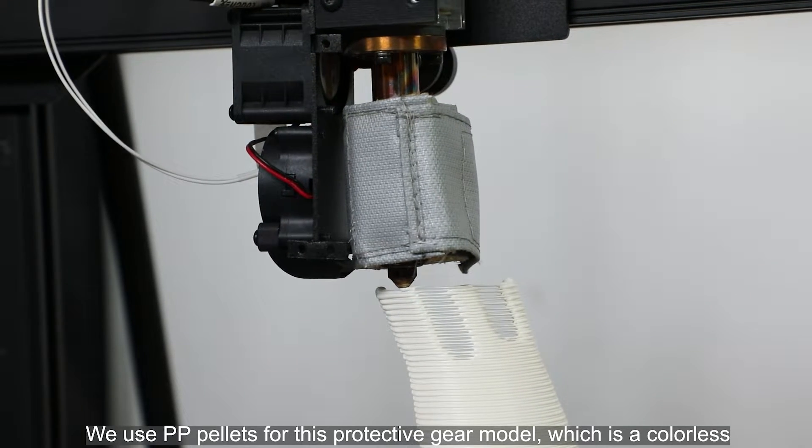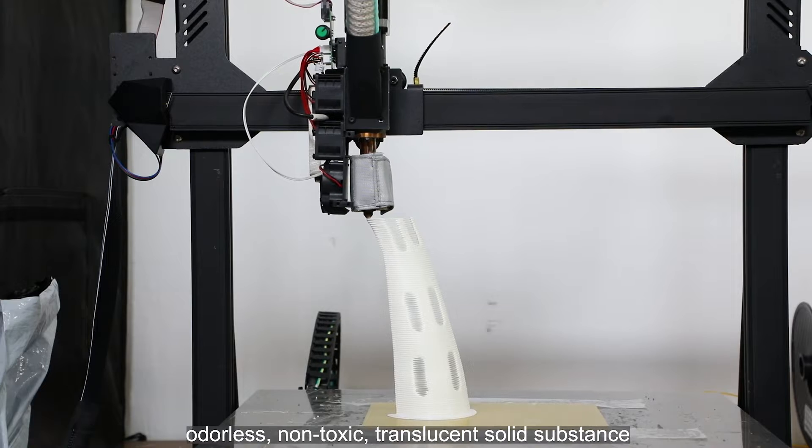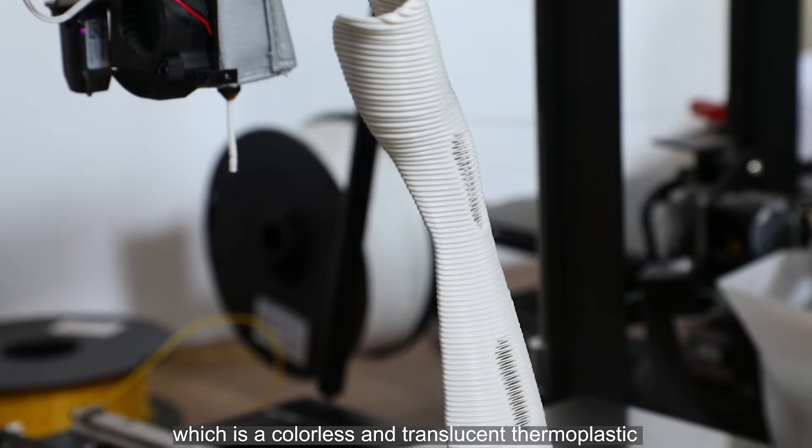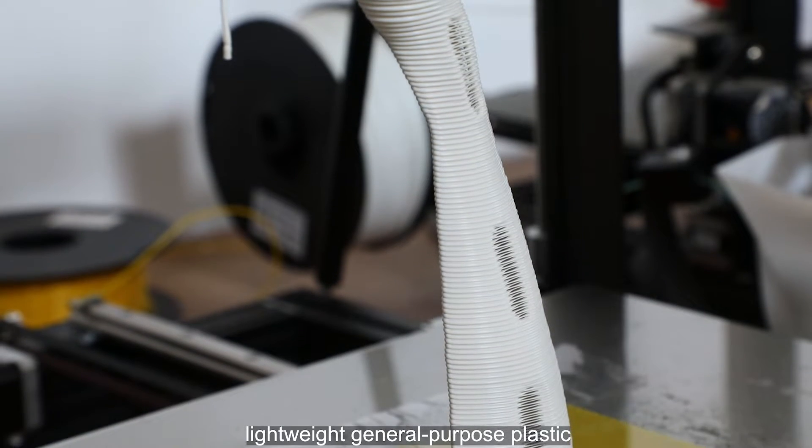We use PP pellets for this protective gear model, which is a colorless, odorless, non-toxic, translucent solid substance—a thermoplastic lightweight general-purpose plastic.